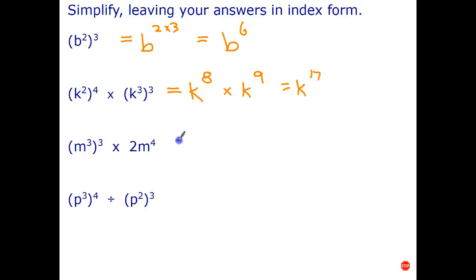Okay, let's see how you went on these. So, the first step is to expand out this and get rid of the brackets. That's going to be m to the power of 3 times 3, which is m to the power of 9. That's going to be m to the power of 4.